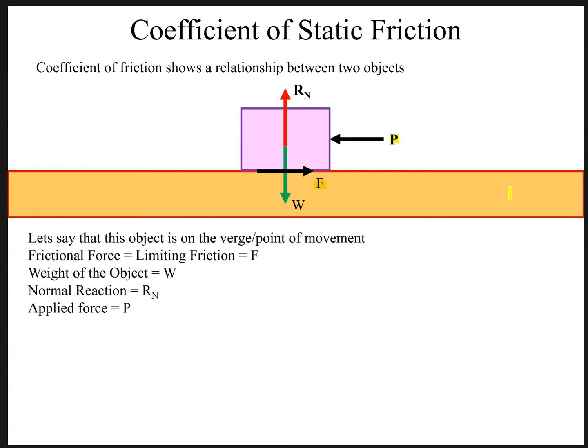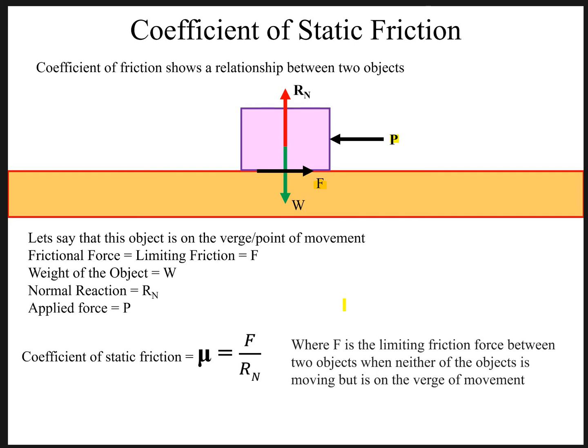Let's say this object is on the verge of point of movement. So in this case the coefficient of static friction would be denoted by μ equals to F divided by Rn, where F is the limiting friction and Rn is the reaction force of this block.